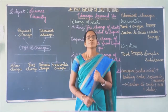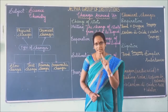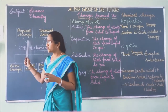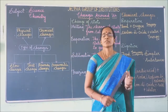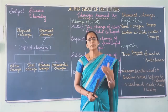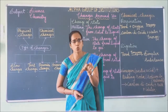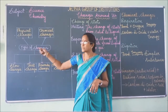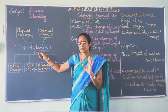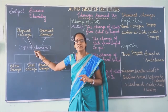A physical change is a change where the property of the substance does not change, but there is a change in shape, size, or state of matter. Some examples: melting of ice, melting of wax, folding of paper, and dissolving common salt or sugar in water. Here, the property of the substance does not change — only shape, size, or state changes. Most physical changes are reversible changes.